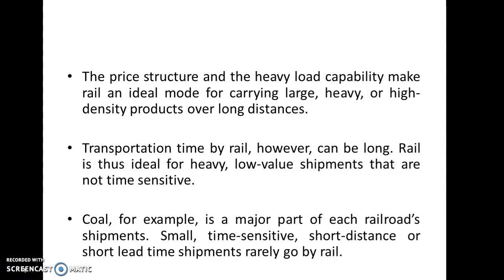The price structure and the heavy load capability of trains make rail an ideal mode for carrying large, heavy, or high-density products over long distances. The price structure is high, but the advantage is trains can carry heavy loads which may not be possible in trucks or air carriers. So to carry heavy loads from one place to another over long distances, rail is an ideal mode.